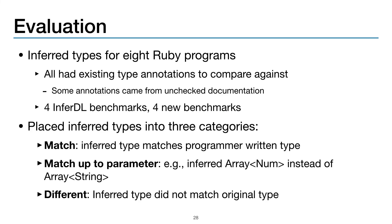We evaluated SimTyper by using it to infer types for eight Ruby programs, all of which had existing type annotations to compare against — and some of these annotations came from non-type-checked documentation. Four of these benchmarks were previously used as InferDL benchmarks, and four were new benchmarks. We placed the inferred types into three categories: match, where inferred types matched programmer-written annotations; match up to parameter, for example if SimTyper inferred array number instead of array string; and different, for cases where the inferred type did not match the original type.